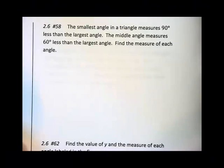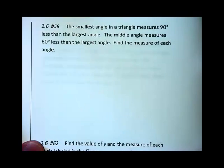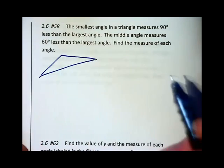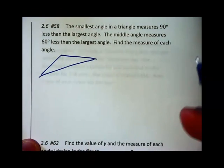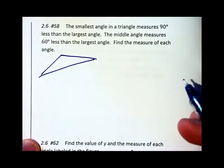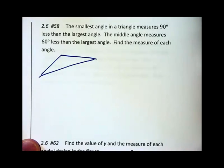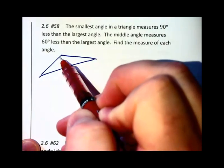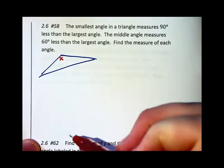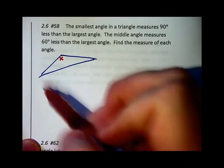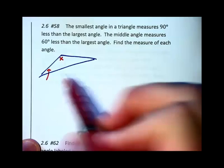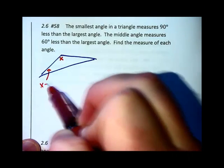The smallest angle in a triangle measures 90 less than the largest angle. I'm going to draw a triangle here. 90 less than the largest. The middle one is 60 less than the largest. So it almost seems like two of them are in terms of the largest. So I'm going to let x be the largest.